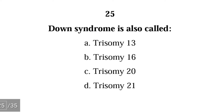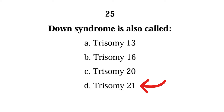Number twenty-five: Down syndrome is also called — trisomy 13, trisomy 16, trisomy 20, or trisomy 21? The correct answer is D — Down syndrome is the most common trisomy, also known as trisomy 21. It happens when an individual has three chromosome 21 instead of the normal two.